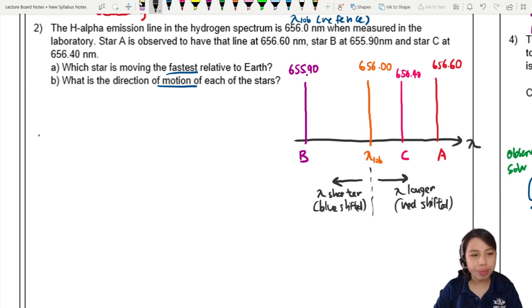Why don't we make a table. So we have A, B, C. This is the star. And let's find the delta lambda.